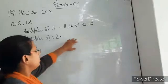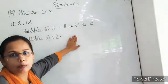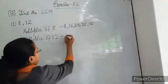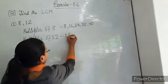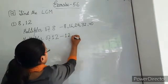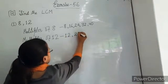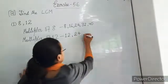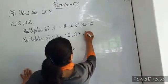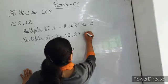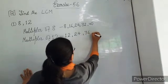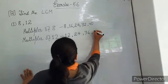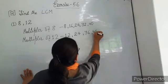Let's see if we can find out the common multiple. Now multiples of 12: 12 ones are 12, 12 twos are 24, 12 threes are 36, 12 fours are 48.